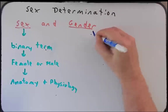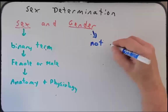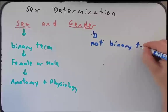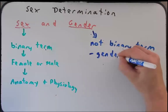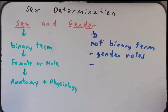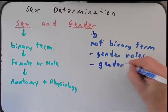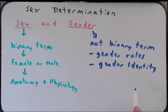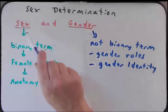Gender however is something that's different. We don't think of it as being binary, so it's not always a binary term. Gender is often a little bit more hard to define, but we can think about gender roles — that is the role of the individual male or female in society. We can also think about gender as gender identity, which is an individual's concept of themselves. One's gender does not necessarily have to coincide with one's sex. In this podcast and for this class in genetics we will talk about an individual's sex and how that sex is determined.